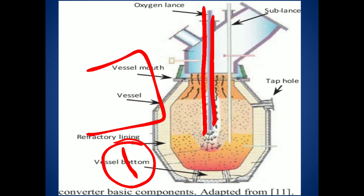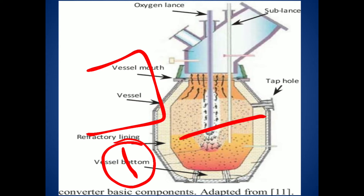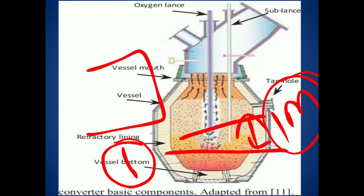When the oxygen and lime react with the pig iron, the impurities get oxidized, forming slag as well as steel. The distance between the bottom point of the lance tube and the molten pig iron is one meter.